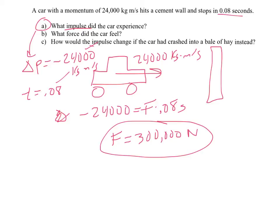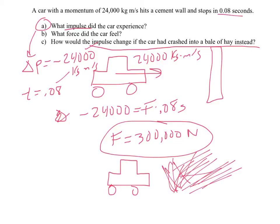Now, how would the impulse change if the car crashed into like a bale of hay instead? Well, remember, impulse is just change in momentum. If this car crashes into a bale of hay and still comes to a stop, well, ultimately, it's still going to lose all that momentum. So its impulse is the same.